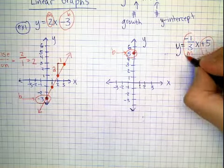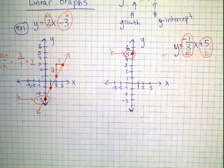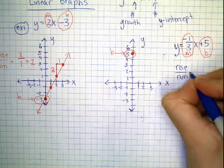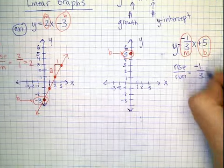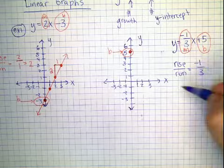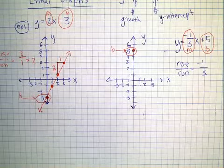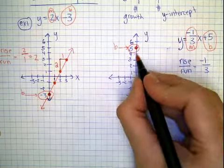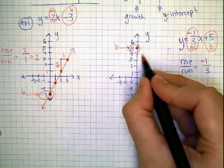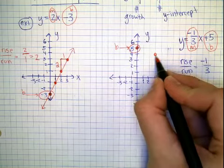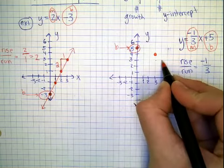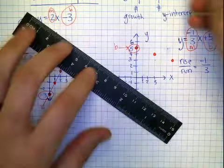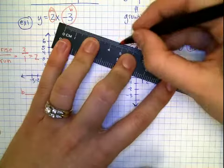Negative one-third is our M, our rise over run. Our rise is negative one over three. The negative tells us we're not rising, we're dropping, going down. The pattern is shrinking. Start at five and count down one and run three. Down one over three. Down one over three. Always go to the right when you're doing your run.